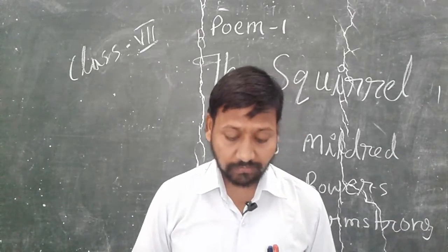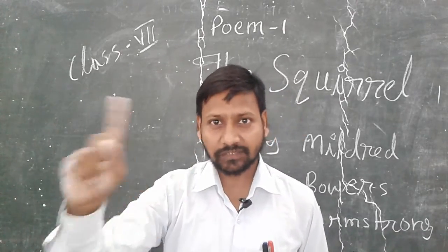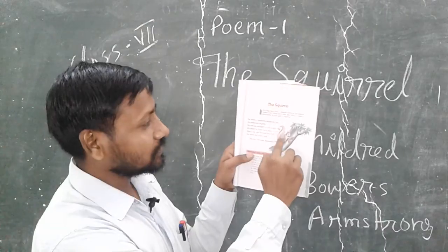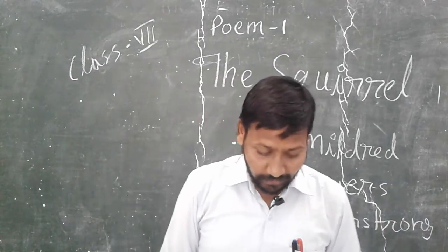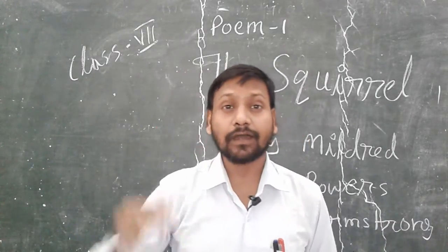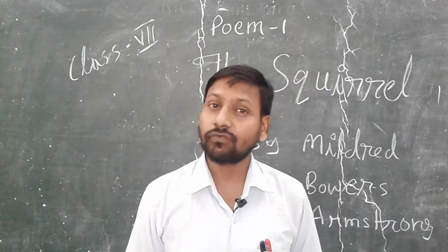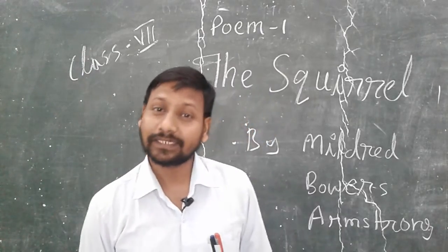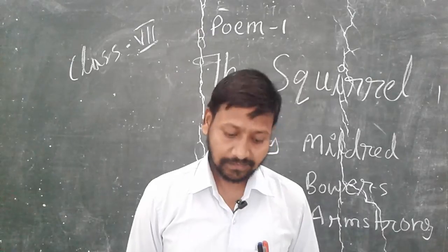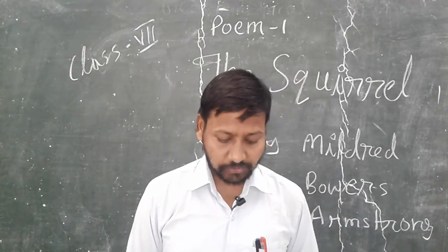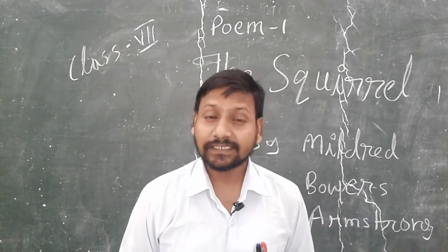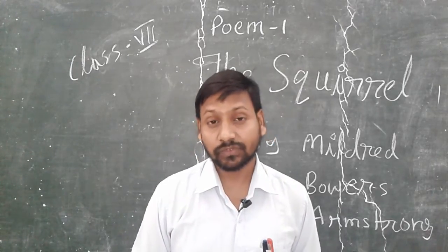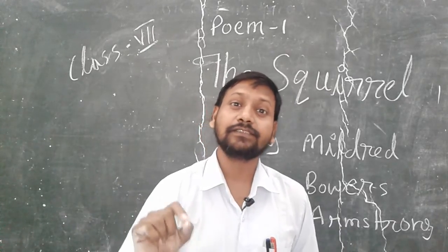He wore a question mark for tail — his tail, as you have seen, is looking like a question mark. And an overcoat of grey — the upper body's colour is grey, so that is what the poet says, overcoat is grey. He set up straight to eat a nut — when he is eating the nut, he is sitting straight.